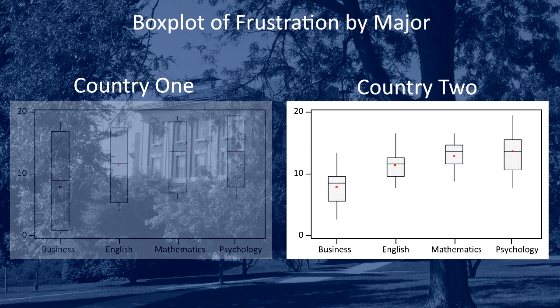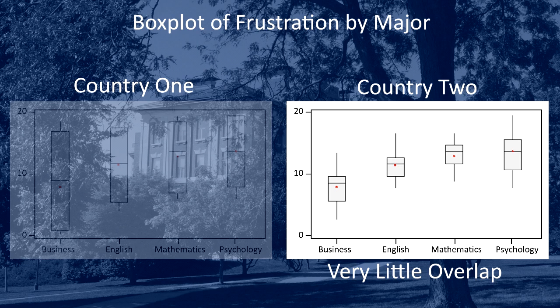Box plots for country 2 show very little overlap because of the small amount of variation in frustration scores within the groups. It would be very hard to believe that we are sampling from four groups that have equal population means. This case is an example of when the null hypothesis claiming equal population means would be false.